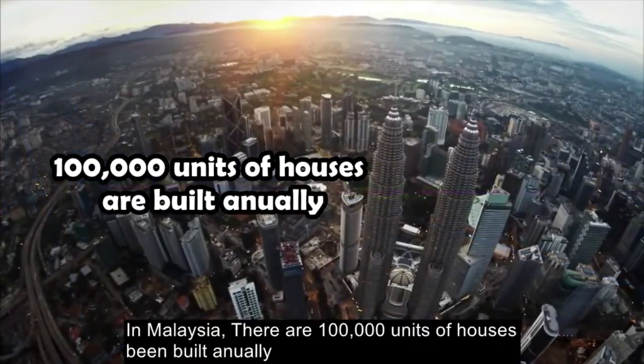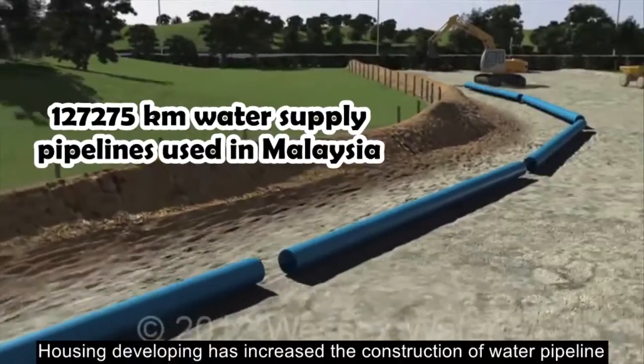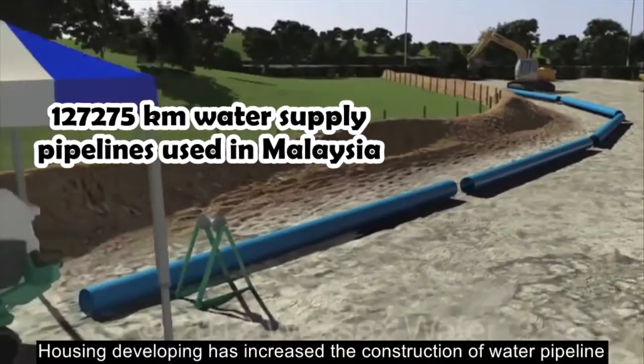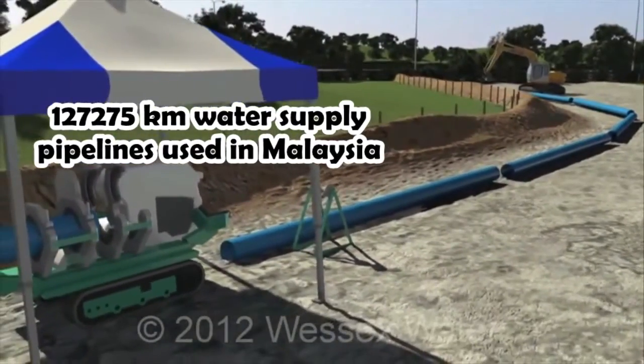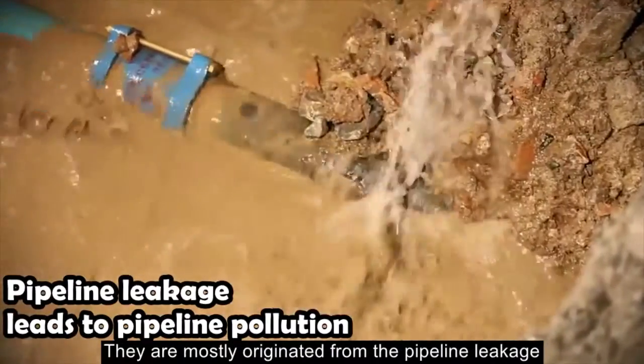In Malaysia, there are 100,000 units of houses built annually. Currently, housing development has increased the construction of water pipelines. Various kinds of turds exist in the pipeline; they are mostly originated from pipeline leakage.